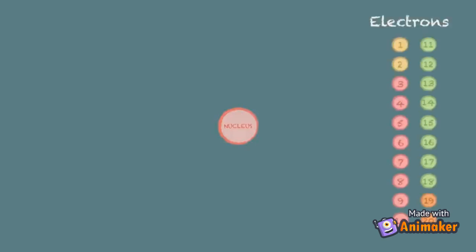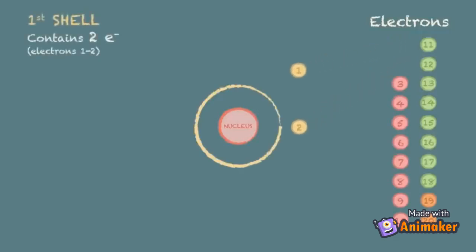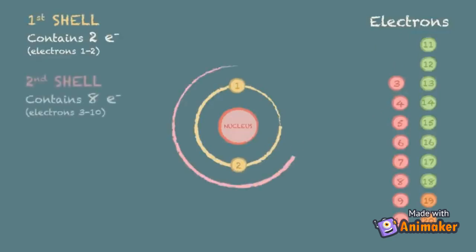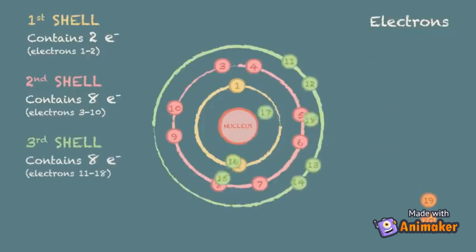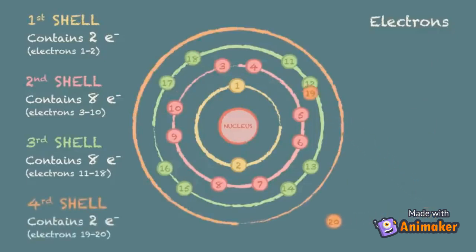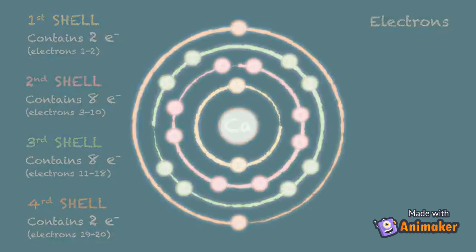And at this level, you only need to know the rules for the first 20 elements. The maximum numbers are as follows. The first shell can contain a maximum of two electrons. The second shell, up to eight electrons. The third shell also has a maximum of eight electrons. And the 19th and 20th electrons go into the fourth shell. And this would actually represent a calcium atom.